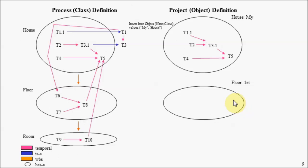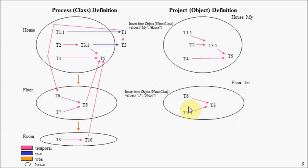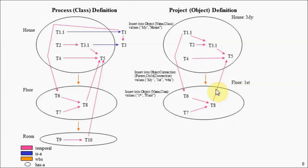Let's assume we would like to instantiate a floor and call it 'first'. So we insert into our object table, naming it 'first' of type 'floor'. TCSQL behind the scenes will instantiate our tasks and the temporal relationships between them. Assume now we would like to connect our first floor to our house — so we insert into our object connection table. TCSQL will then connect up the tasks that cross entity boundaries, establishing this temporal relationship.